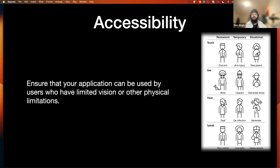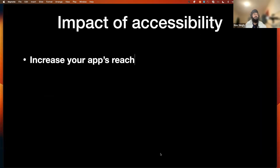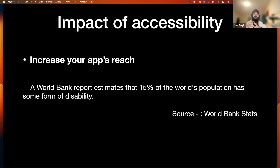As you can see, there are examples like one arm, blind, or deaf. So what's the impact of accessibility in terms of applications? We are focusing specifically on Android in this talk. The major impact is that it will increase the app's reach. As per World Bank reports, an estimated 15% of the population have some sort of disability. By providing accessibility support, we cover that part and ultimately grow the number of app installations.